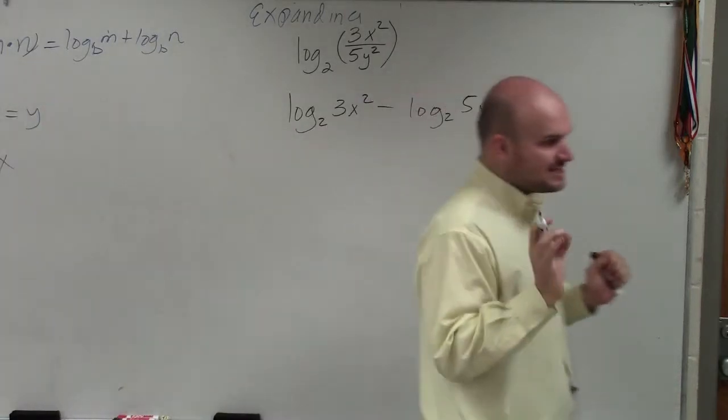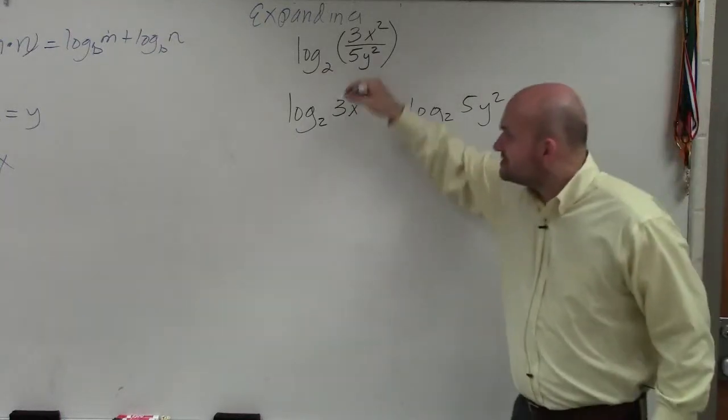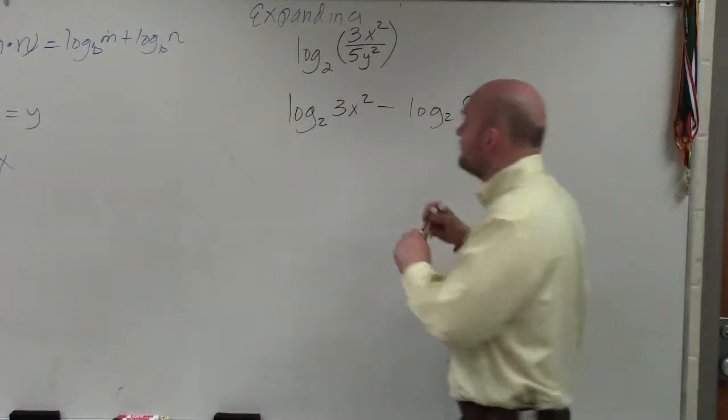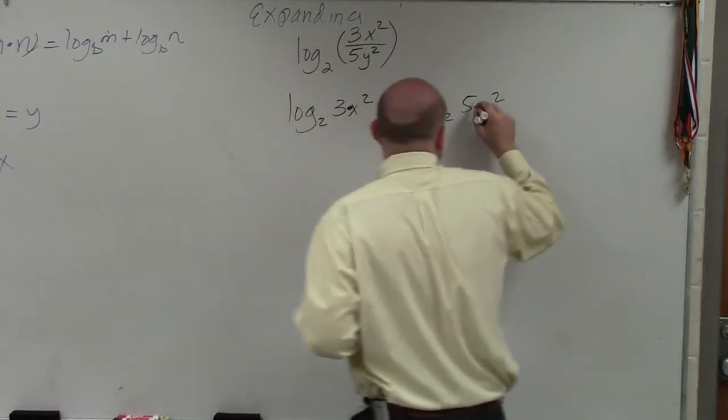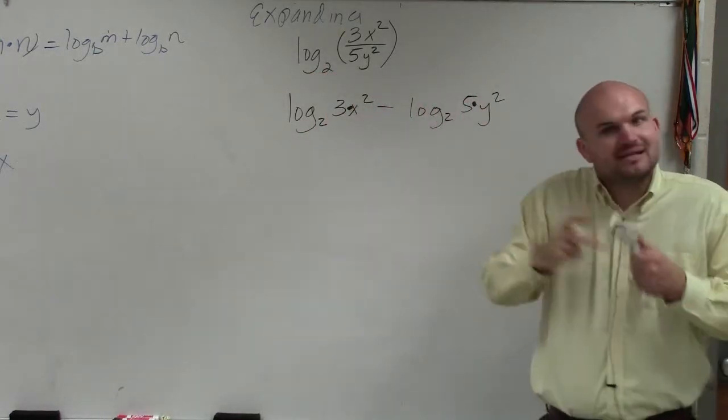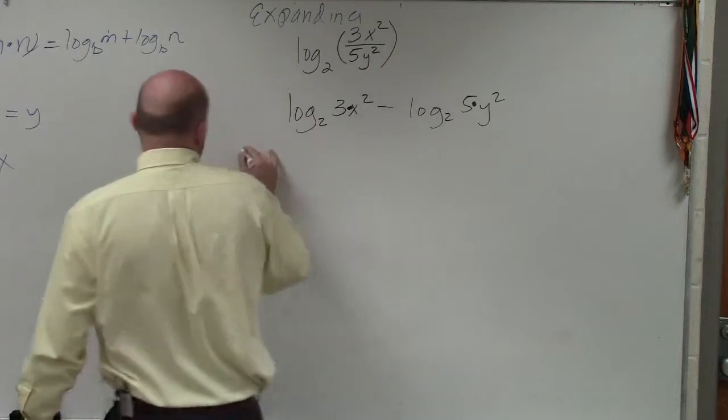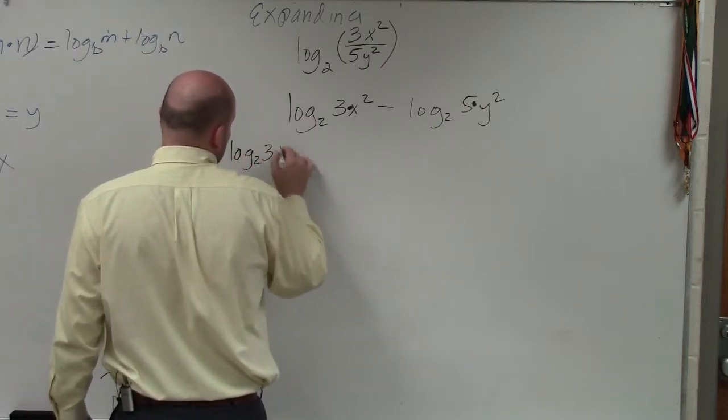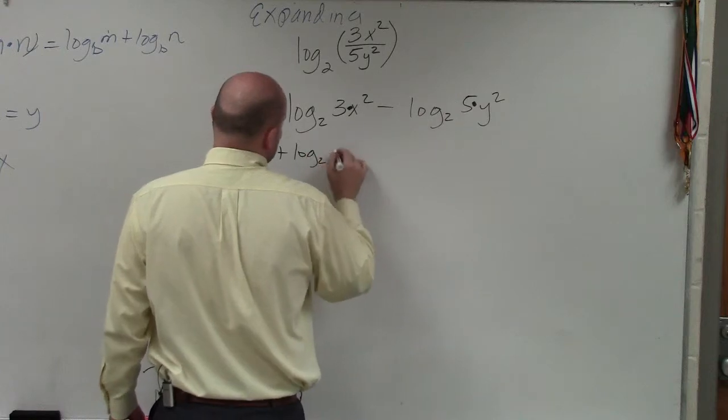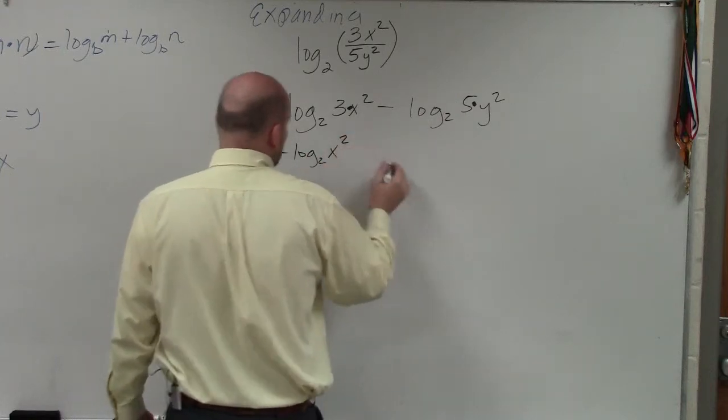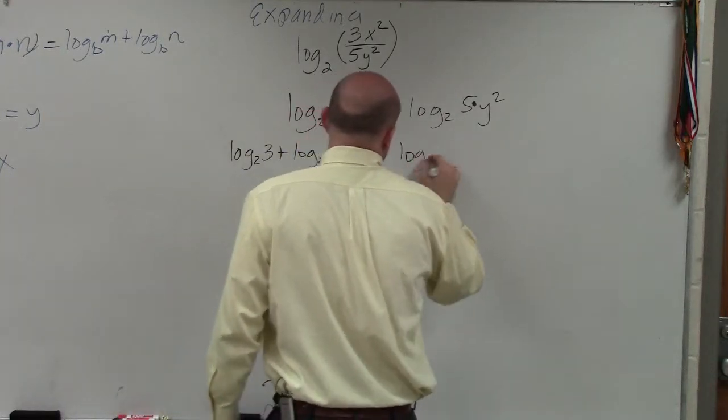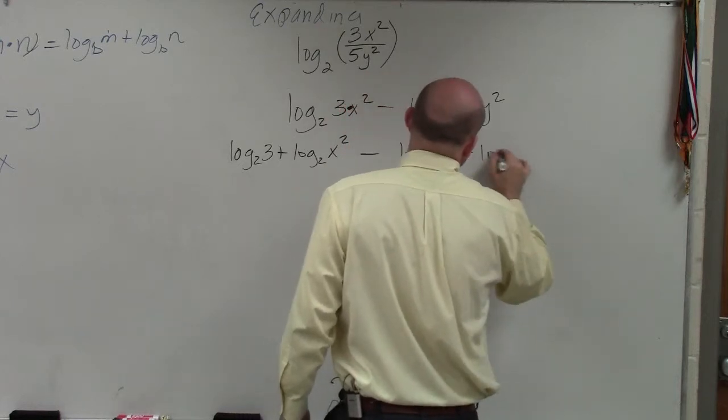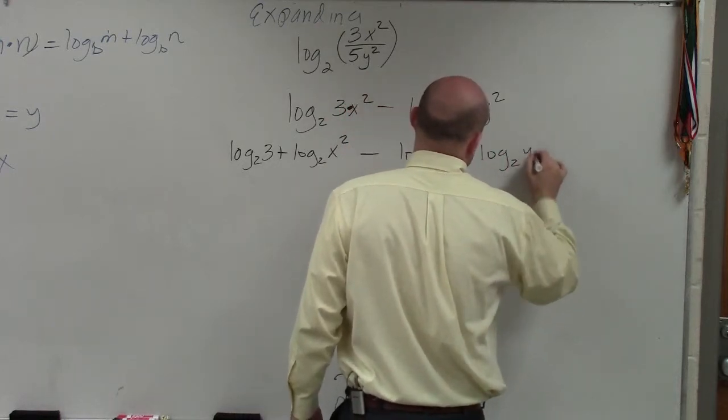Now the next thing is, you can see I have the product. Each of these logarithms now has the product, so I'm going to separate both of these with addition. So I have log base 2 of 3 plus log base 2 of x² minus log base 2 of 5 plus log base 2 of y².